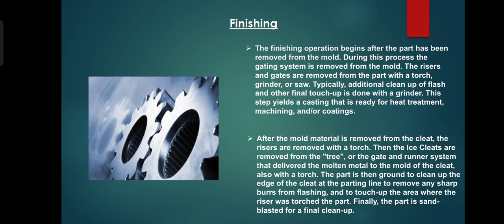Typically additional clean-off, flash and other final touch-up is done with the grinder. After the mold material is removed, the risers are removed with the torch. Then the castings are removed from the tree — the gates runner system that delivers molten metal to the mold cavity.